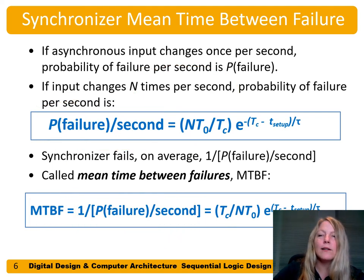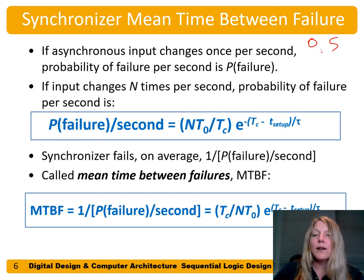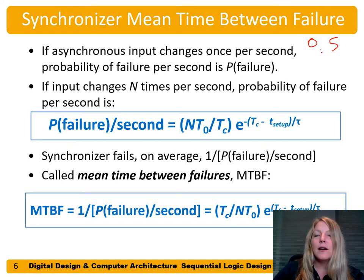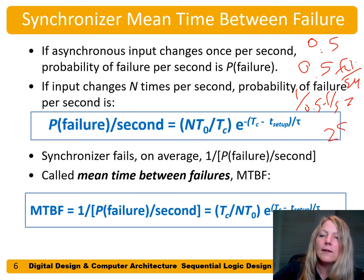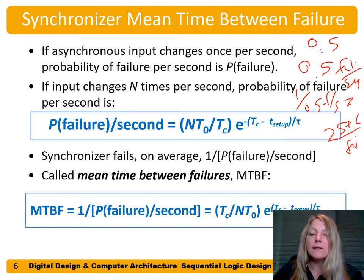Another example: if we toss a coin, the probability of getting heads is 0.5 — 50% chance of heads, 50% chance of tails. If I toss it just once per second, then the probability of failure per second is 0.5 failures per second. One over 0.5 failures per second equals two seconds. So the mean time between failures for this example is two seconds.